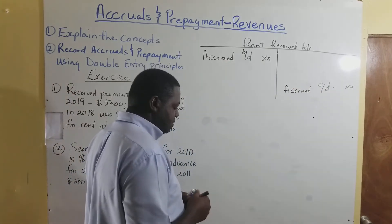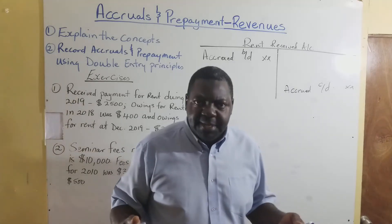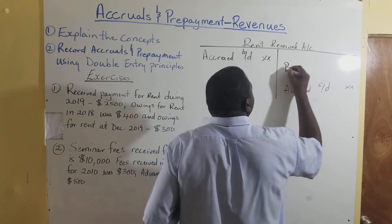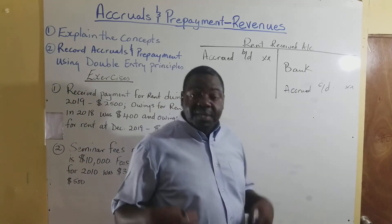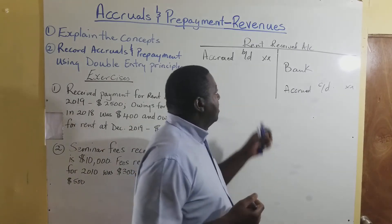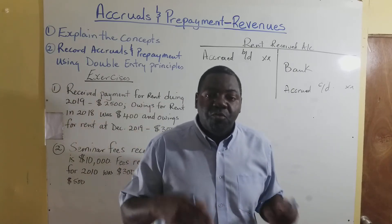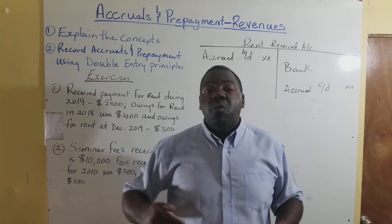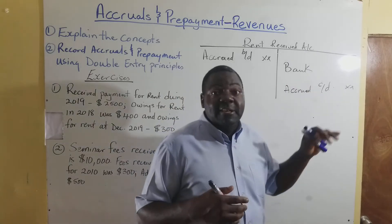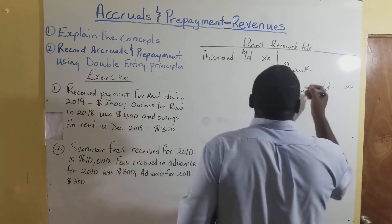When we receive the money from our tenant, we are going to record it on the credit side. Remember, this is a revenue. In our previous lesson when we were dealing with rent — when we rent the building from somebody and we are paying them for rent, the rent account is debited. But in this instance, we are receiving money for rent, so it is credited. Rent received is credited.